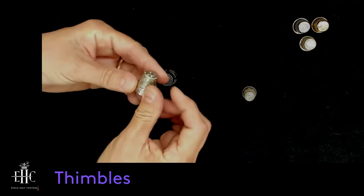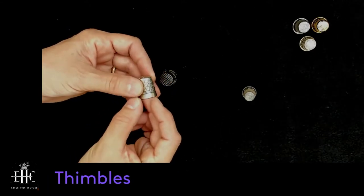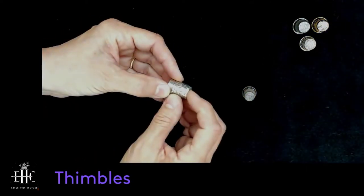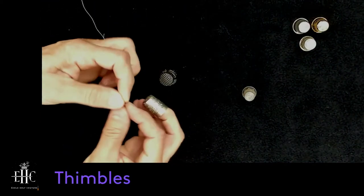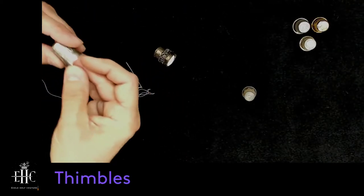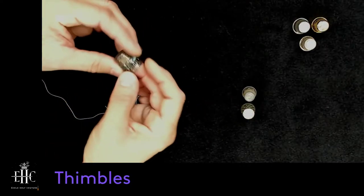This one is functional as well. It is silver, and it has a different type of dimpling pattern on it, but it actually does hold or grasp the end of a needle if you are working with it. It is functional. But I find that because it's silver it's going to tarnish.